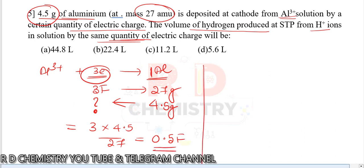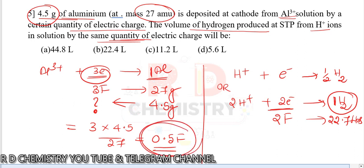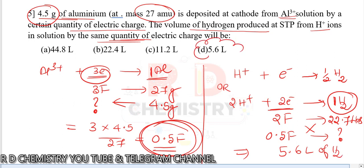To produce hydrogen gas: 2H+ takes 2 moles of electrons (2 faradays) to give 1 mole of H2, which occupies 22.7 liters at STP. Since 0.5 faraday is passed, cross-multiplying gives a volume of 5.6 liters of hydrogen gas. The answer is option D.